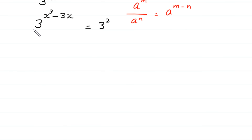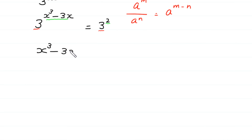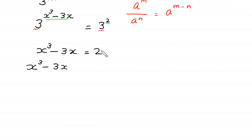Now, you can see that on the left side the base is 3 and on the right side the base is 3. So we can equate the exponents: x cubed minus 3x equals 2. Moving 2 to the left side, x cubed minus 3x minus 2 is equal to 0.